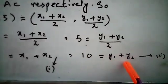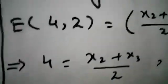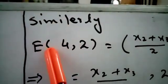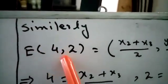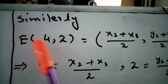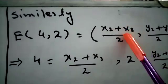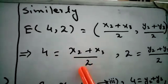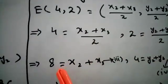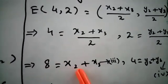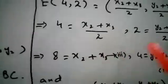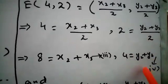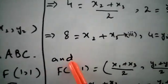Similarly, for the next side BC where E is the midpoint. Using the midpoint formula, E(4,2) equals (x2 + x3)/2 , (y2 + y3)/2. Comparing x-coordinates by cross multiplication: 8 = x2 + x3 — equation number 3. Comparing y-coordinates by cross multiplication: 4 = y2 + y3 — equation number 4.